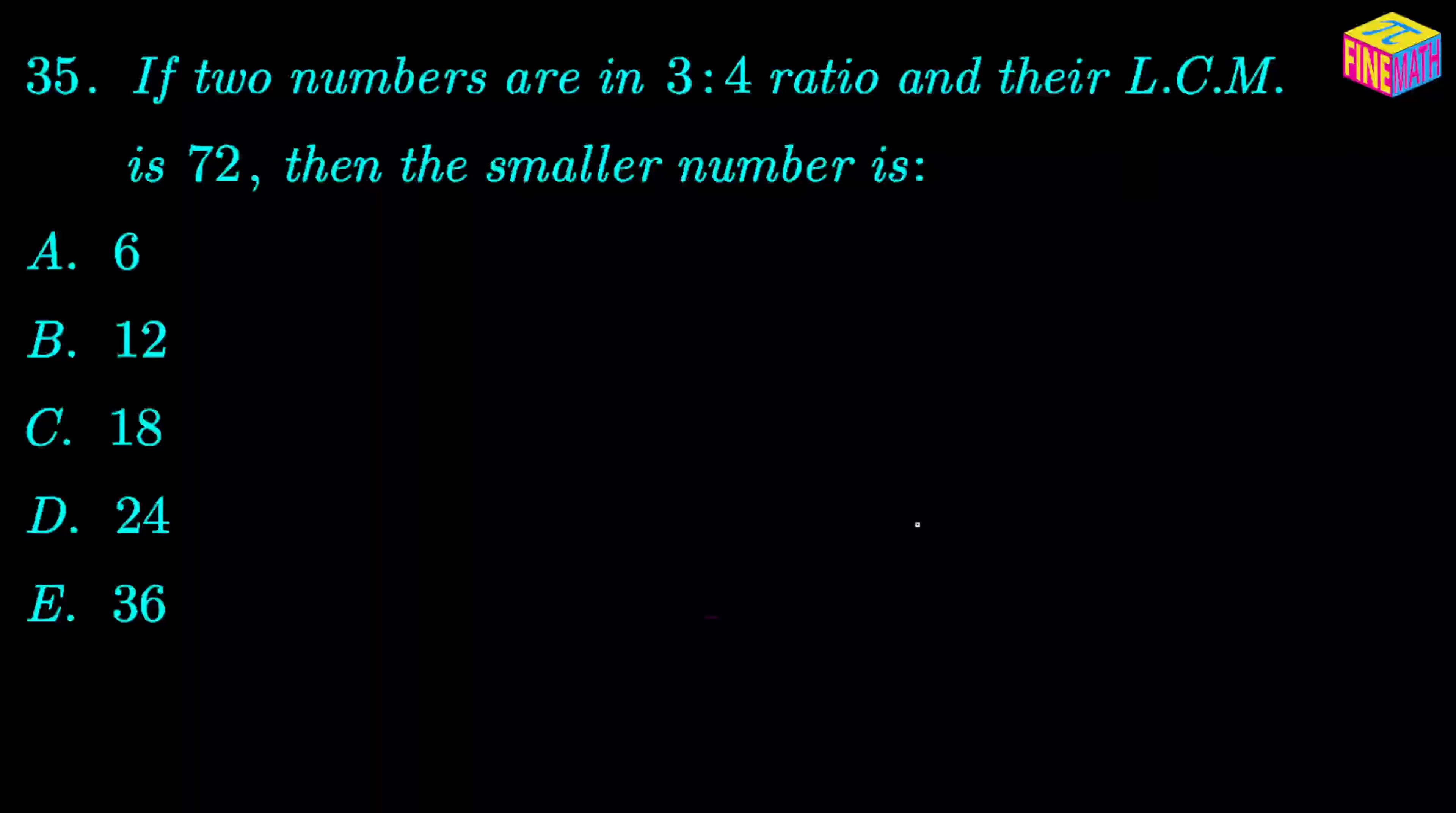The question says that if two numbers are in 3 is to 4 ratio and their LCM is 72, then the smaller number is which one of the following five options.